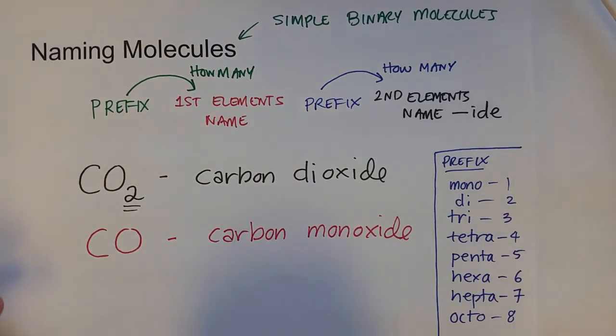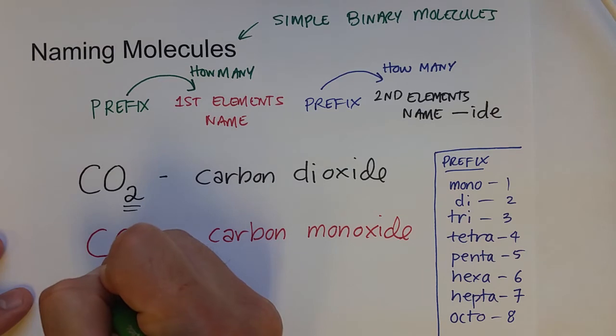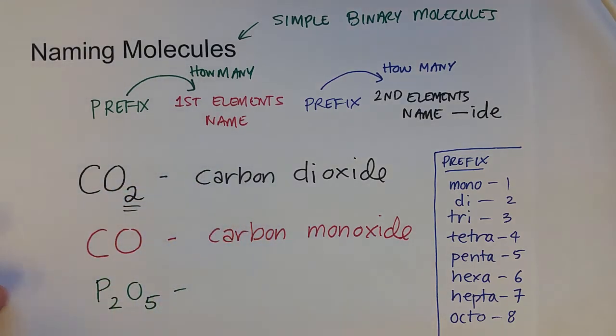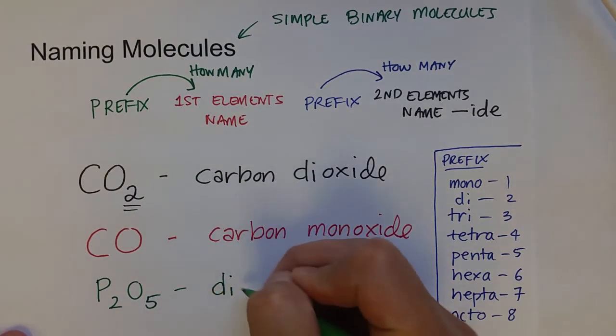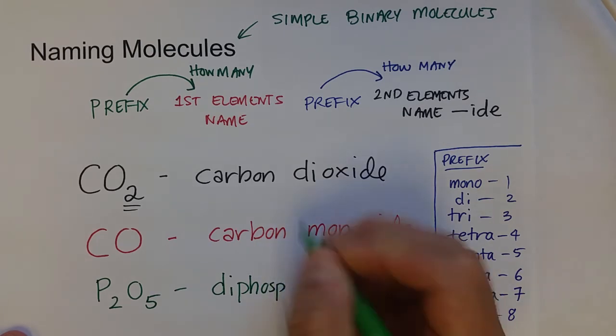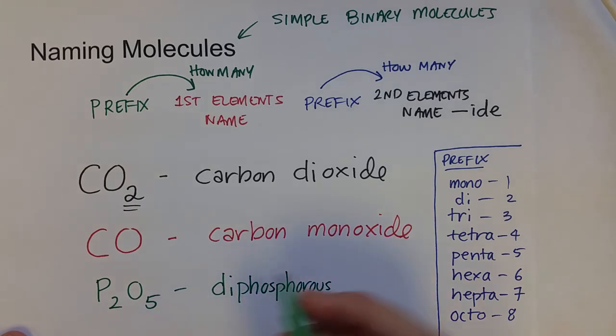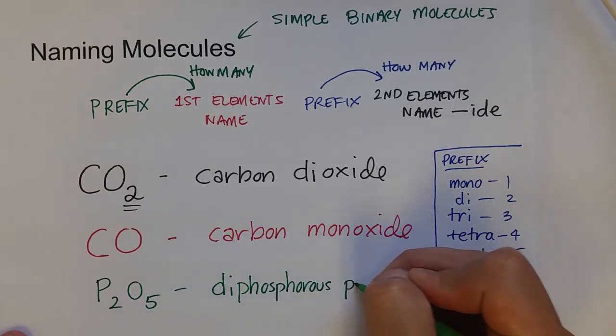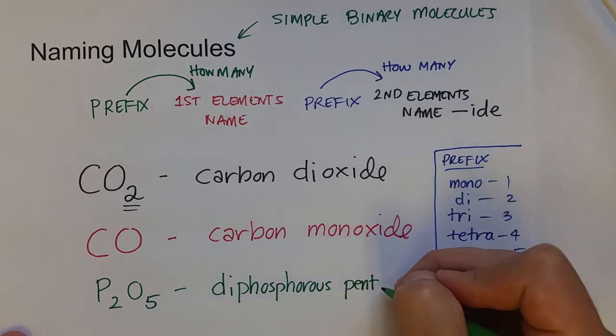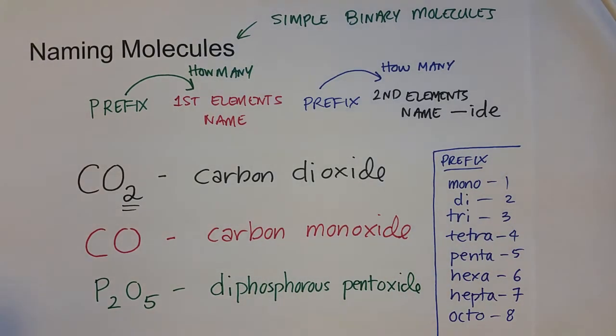Let's name a couple more. Let's try P2O5. In this scenario, we actually have to need a prefix for our first element because there's more than one. So I have to tell you that there's two phosphoruses, and to do so I'm going to say di. So diphosphorus, five is penta oxide, or most people drop the A and just say pentoxide to remove the double vowel.